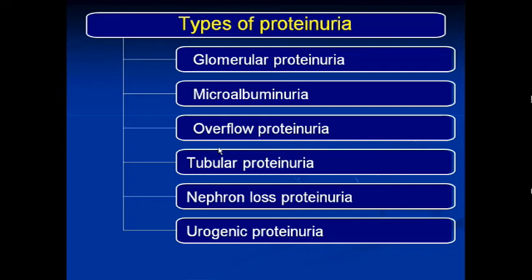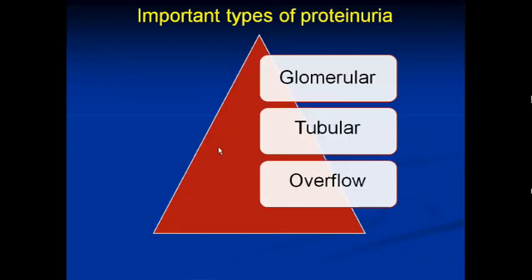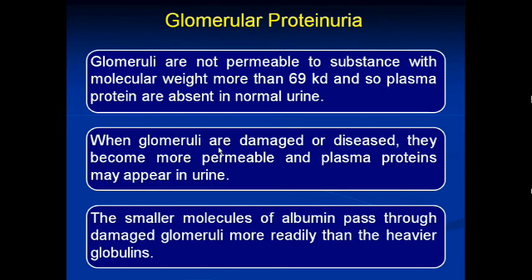Among these, the most important types are glomerular proteinuria, tubular proteinuria, and overflow proteinuria. Now we will discuss each type in detail, starting with glomerular proteinuria.